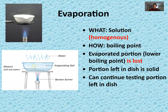What happens is you evaporate the water off using heat — that's lost into the room with nothing capturing it — and you're left with the component that has the higher boiling point. So the salt is left behind in the dish, and you can continue testing it or apply a different separation technique. The key point is that the lower-boiling-point portion is lost into the room.